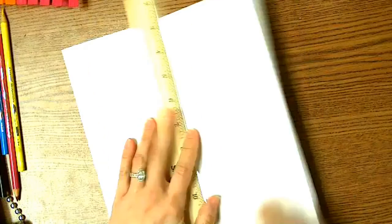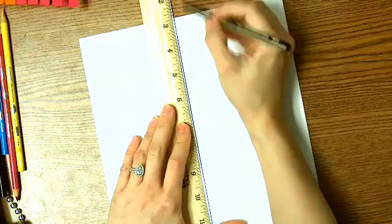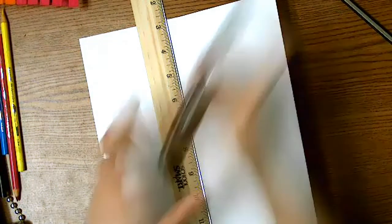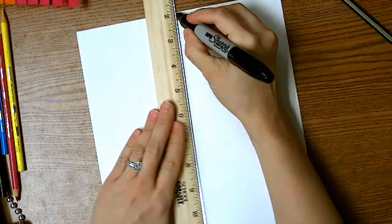Then we're going to use our ruler and we're going to draw a line down that fold. For this video, I'm using a sharpie just so that you can see it really well. You can use a pencil if you would prefer.